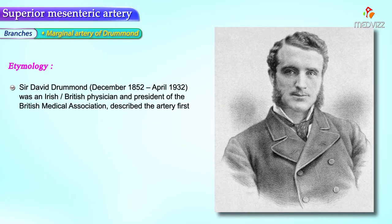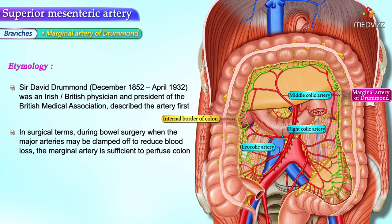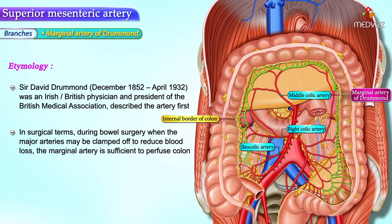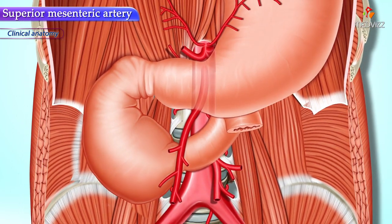Sir David Drummond was an Irish-British physician and president of the British Medical Association. He first described this artery in surgical terms. During bowel surgery, when major arteries may be clamped off to reduce blood loss, the marginal artery of Drummond is sufficient to perfuse the colon.